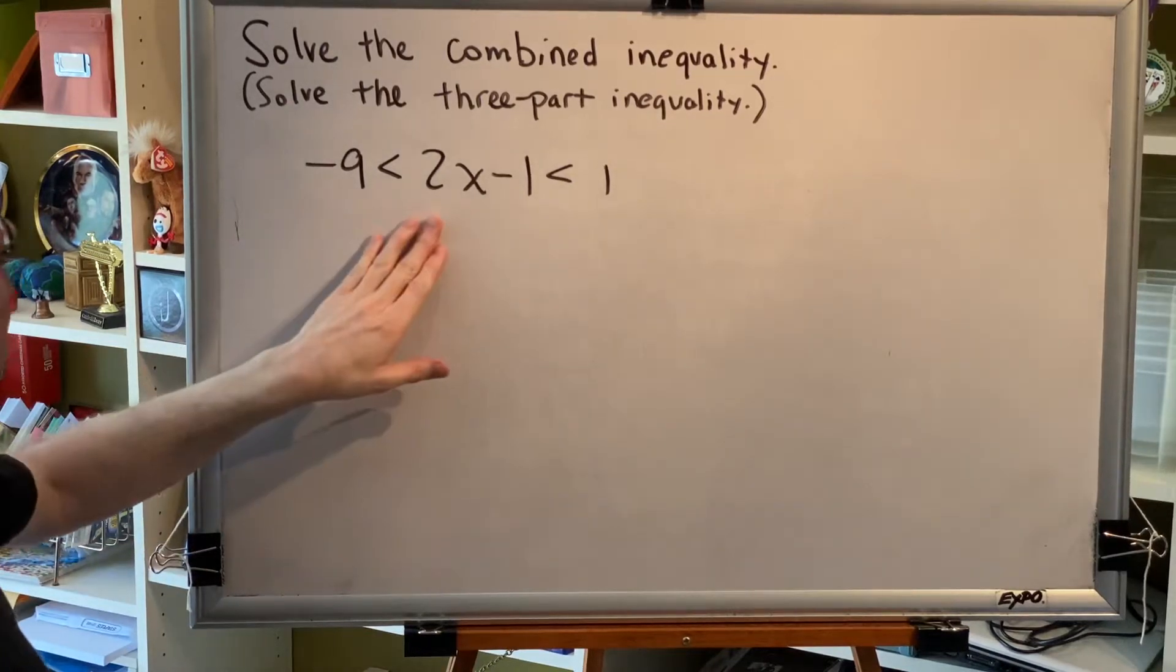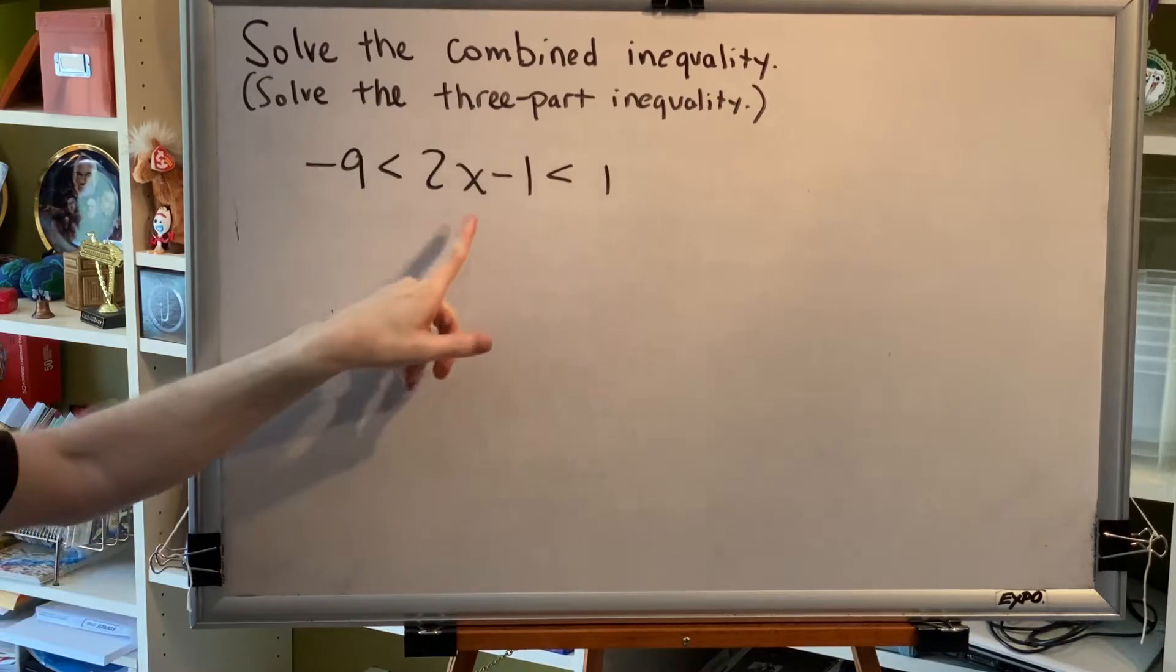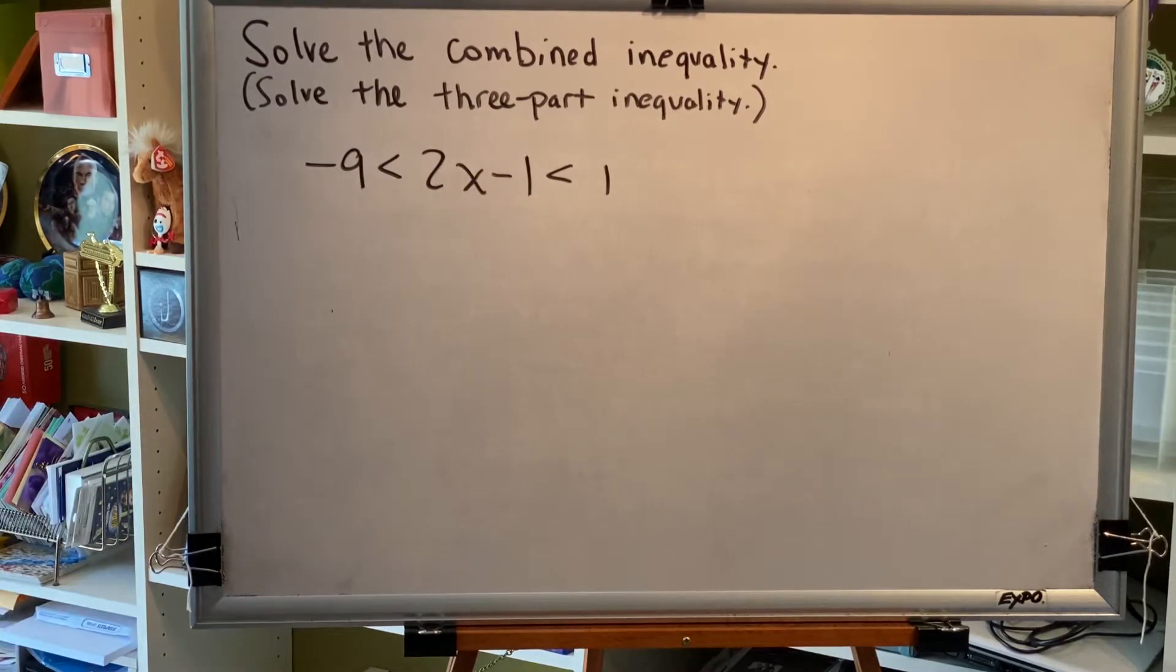Negative 9 is less than 2x minus 1 is less than 1. The variable is in the middle between the two inequality symbols. So to solve this, we must get the variable in the middle alone.